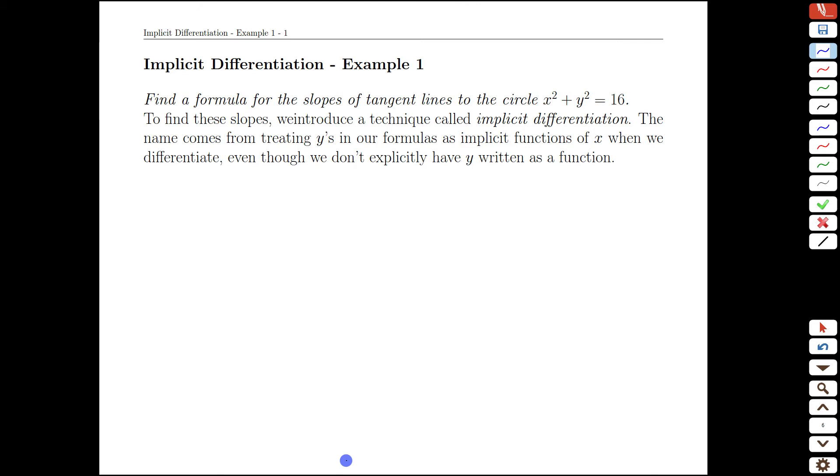In this video we're going to introduce through example the process of implicit differentiation. We're going to look at the circle x squared plus y squared equals 16, which is a circle with radius 4.